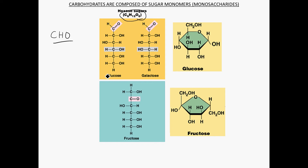There are three hexose sugars you need to know: glucose, galactose, and fructose. They all have the same empirical formula C6H12O6, but the arrangements of the carbons, hydrogens, and oxygens are a little bit different. You can see this in their linear structures — glucose versus galactose versus fructose.